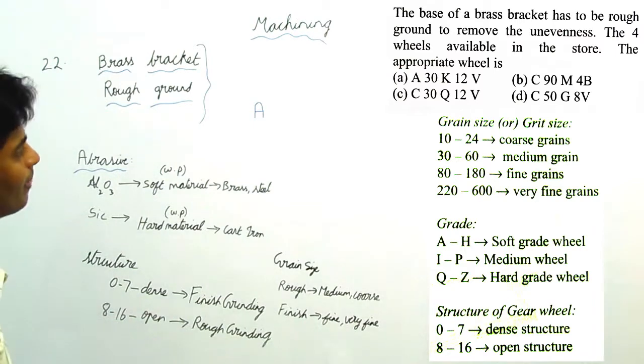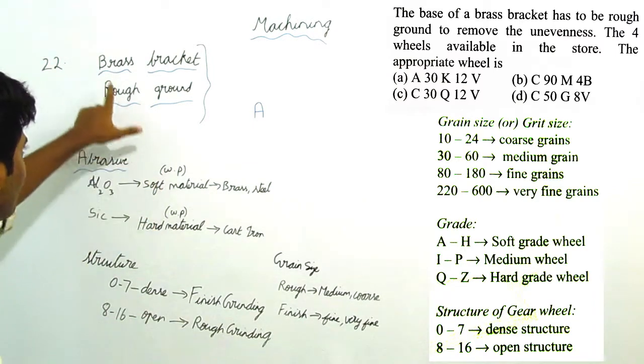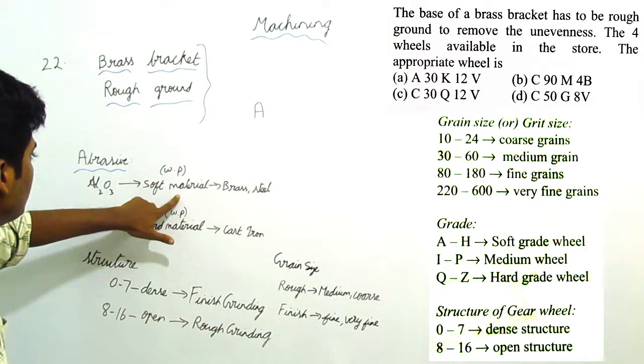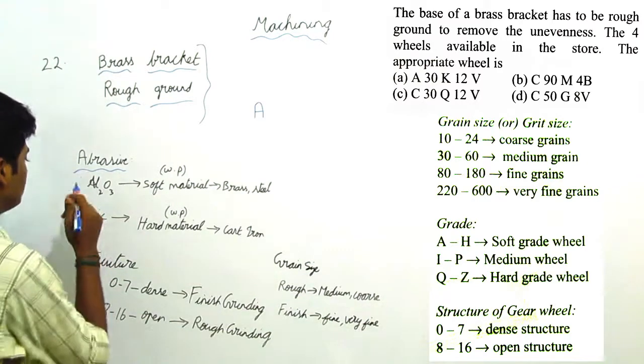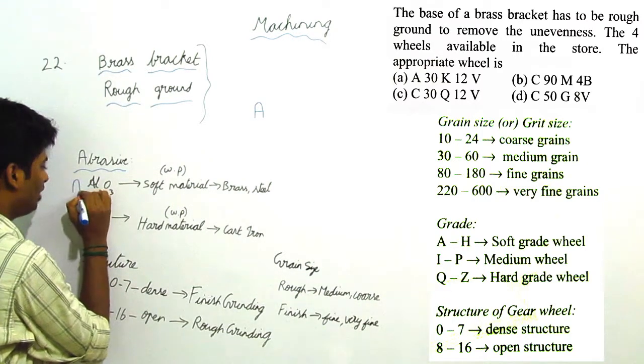For brass, which is soft material, we have to use Al2O3. Al2O3 is represented by A, that is capital A.